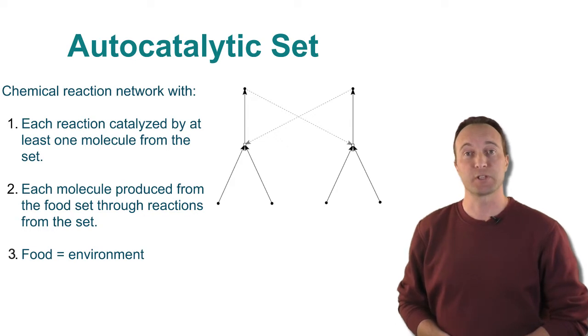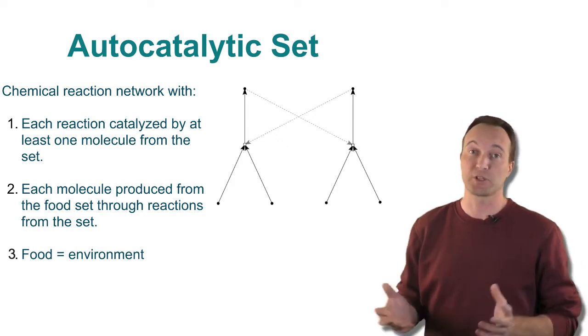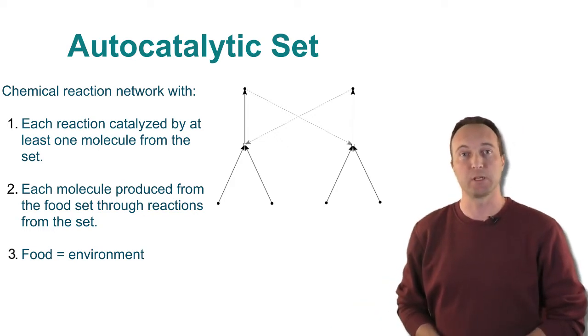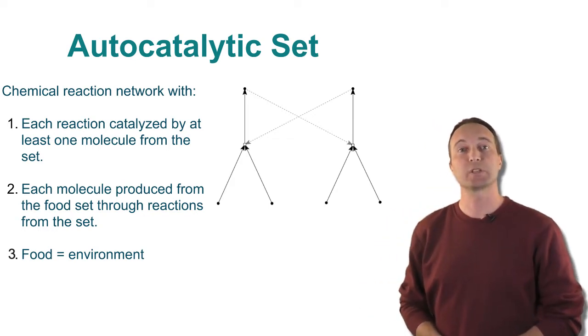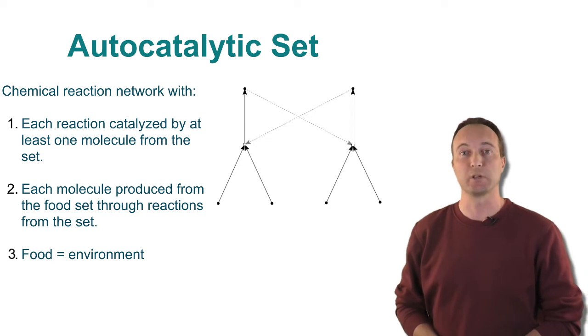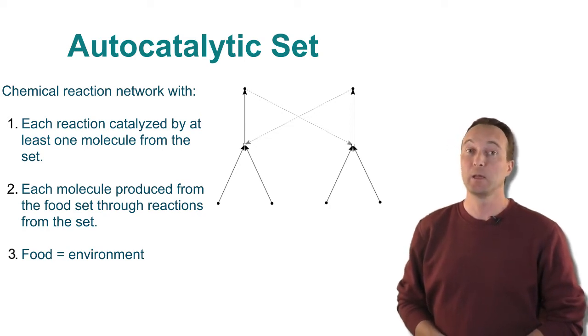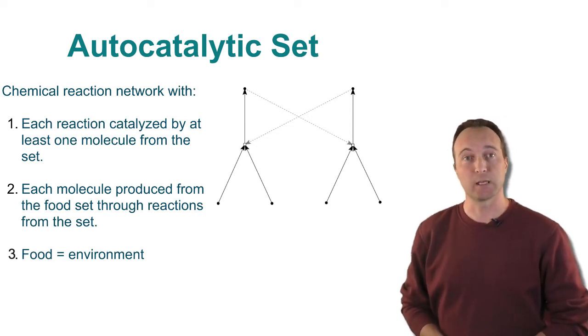The food source consists of basic building blocks, such as the RNA or peptide fragments in the experimental examples, or the molecules that were present on the early earth in a purely prebiotic setting. In other words, the food source consists of those elements that can be assumed to be available in the environment.